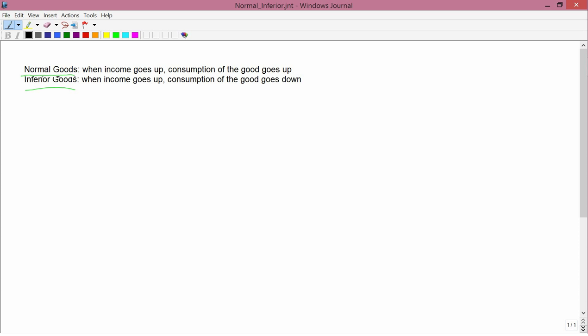Let's see what implications these have for our Engel curves. We have a normal good, call it x, and we draw the Engel curve. When income goes up, consumption is supposed to go up. And therefore, a normal good will have a positively sloped Engel curve.